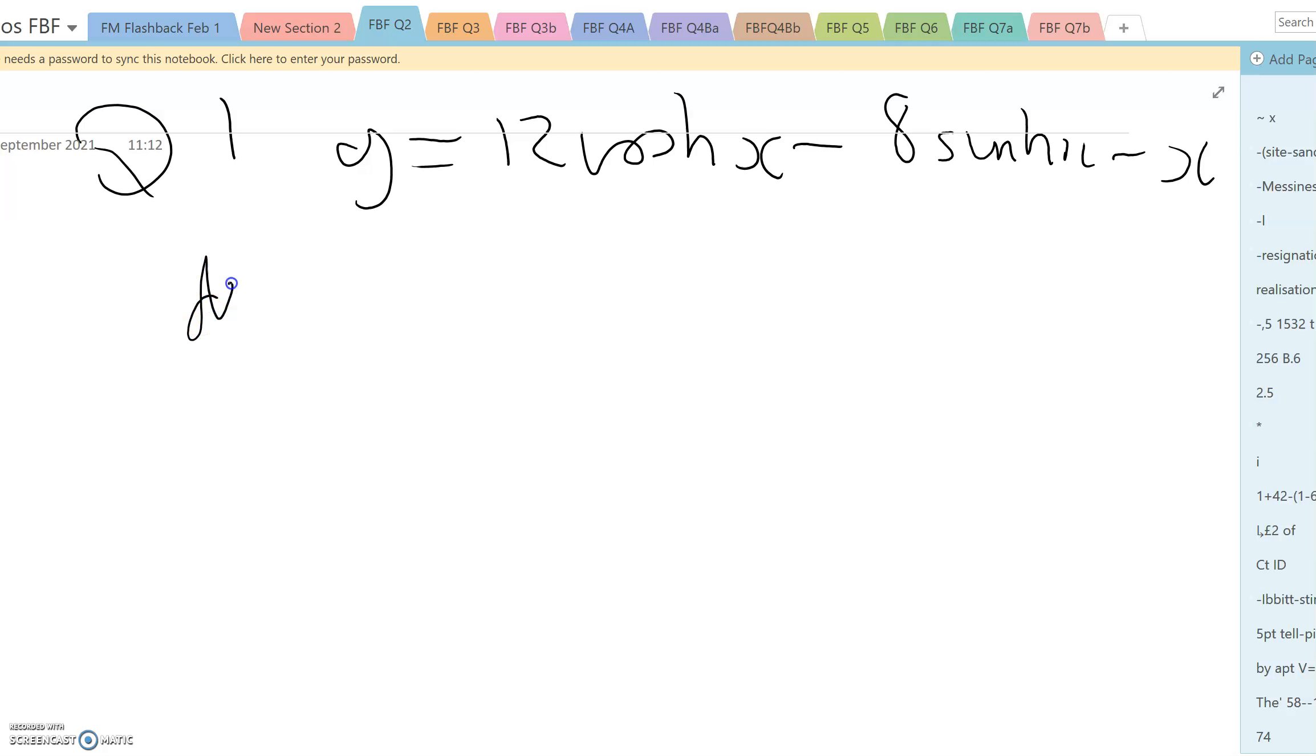If we differentiate, we get dy/dx equals 12 sinh x minus 8 cosh x minus 1, and that's got to equal 0.